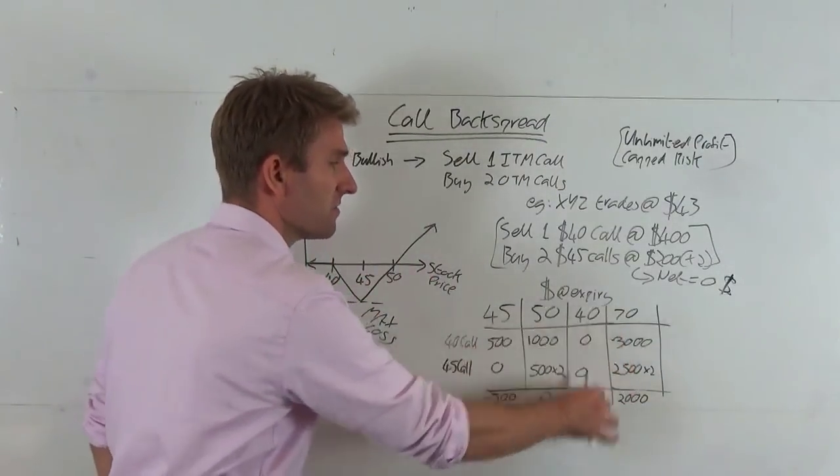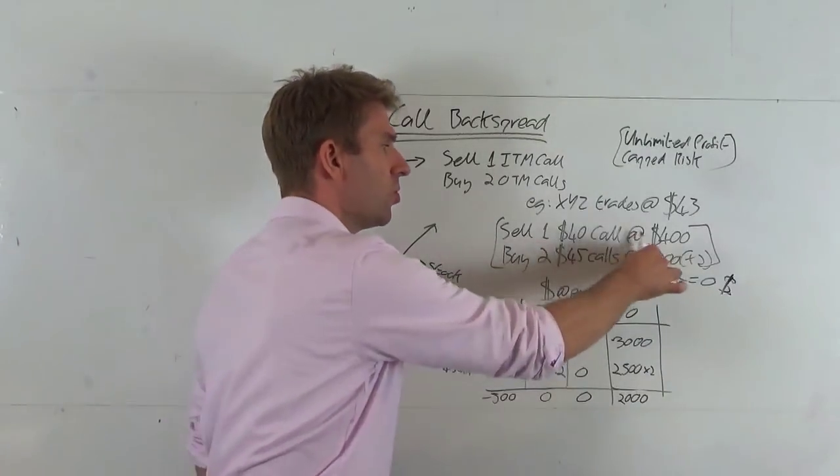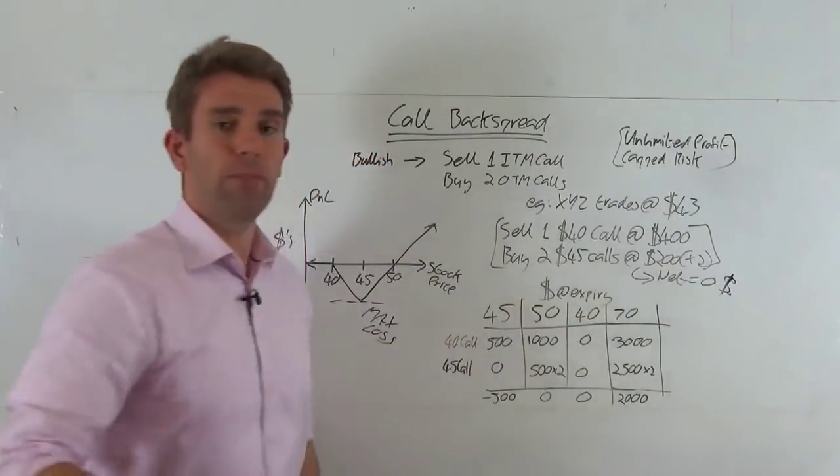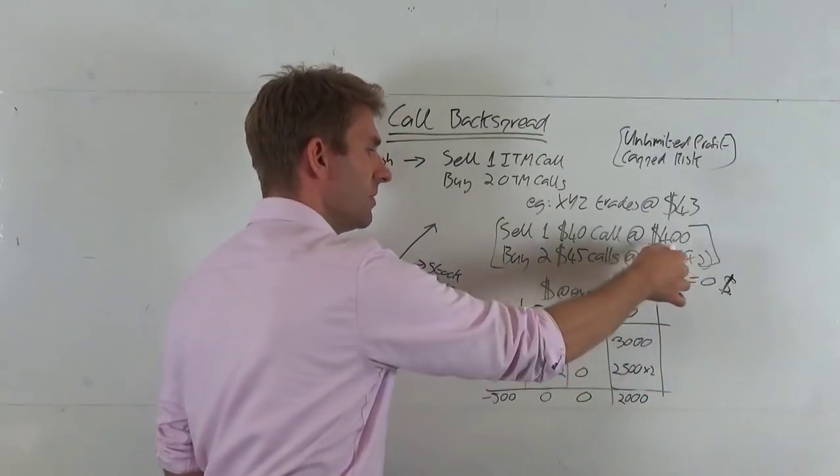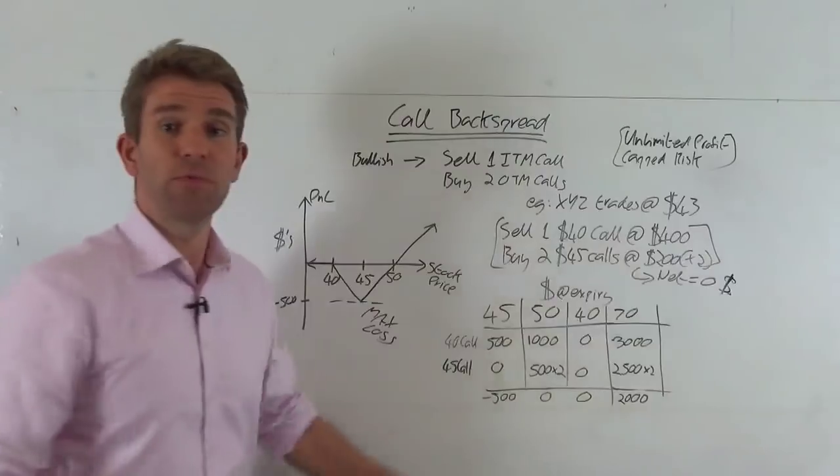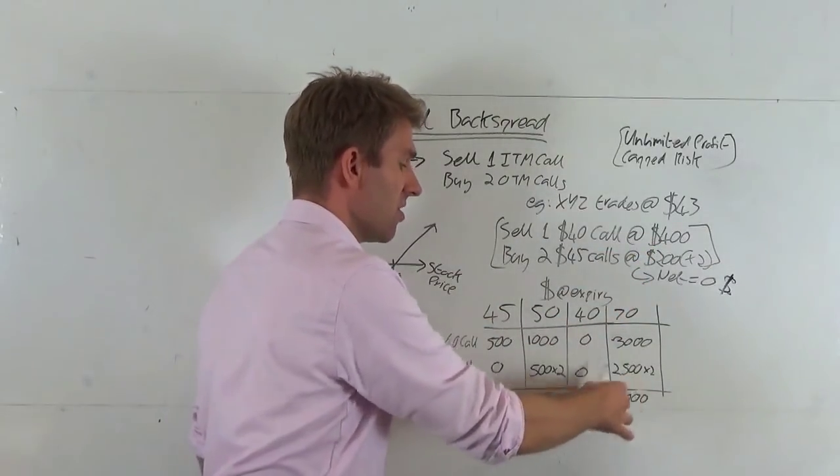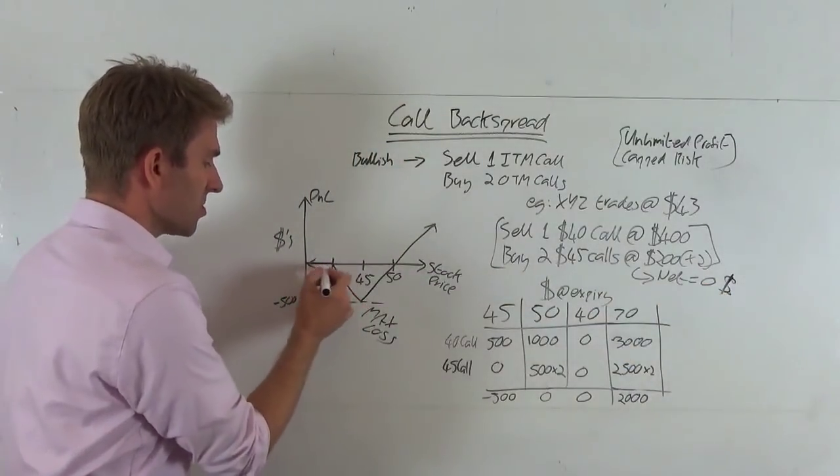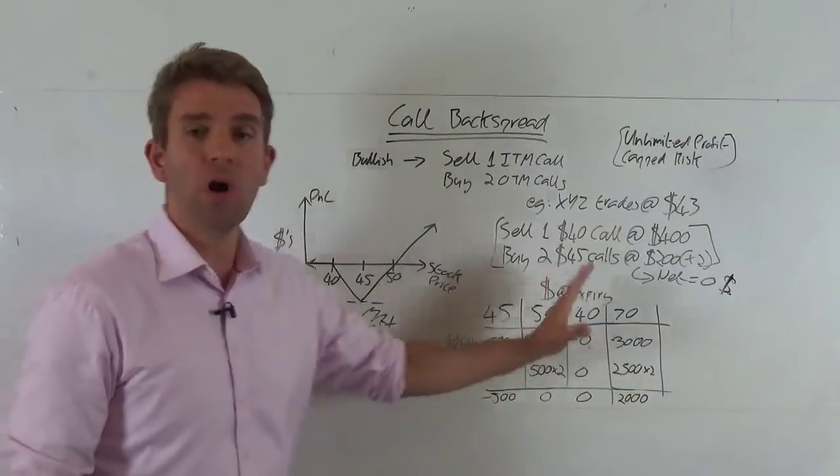So let's say we go down to $40, it's where it gets more interesting because the $40 call that we sold is worthless. The $45 calls that we bought are also worthless. So we've lost that $400 there, but we've also made that $400 from the short call being worthless. So both worth zero, we get zero, we paid zero. So the chart starts to go up to zero here. So anything below 40, you can see they're both worthless.